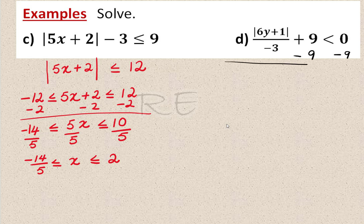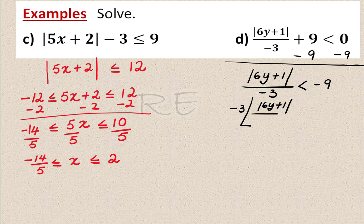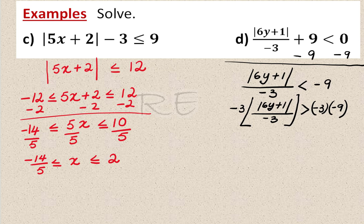For the last problem, move the constant to the right side first. We get the absolute value of 6y plus 1 divided by negative 3 strictly less than negative 9. Multiplying both sides by negative 3 requires reversing the inequality, giving the absolute value of 6y plus 1 strictly greater than positive 27.